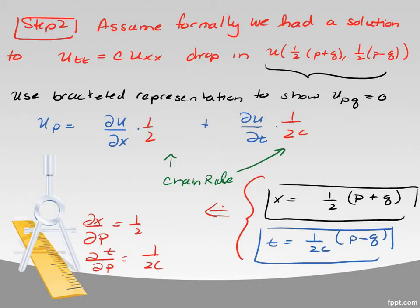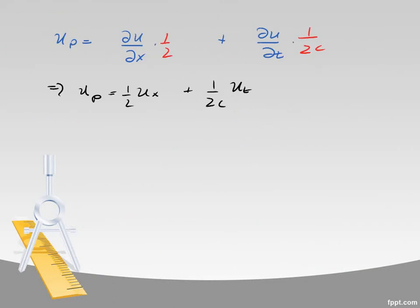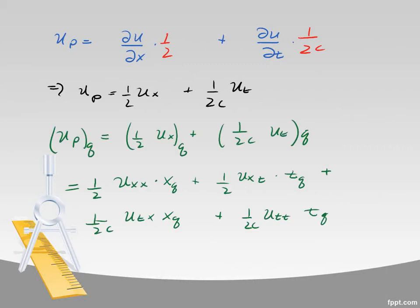So I can now pop those in. The one half and the one over 2c. Okay, so there is that equation again. And now I want to take the derivative again with respect to q.